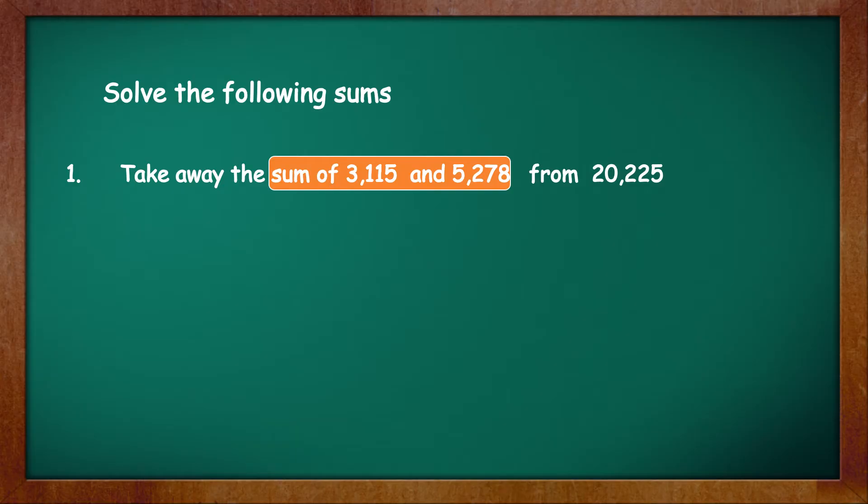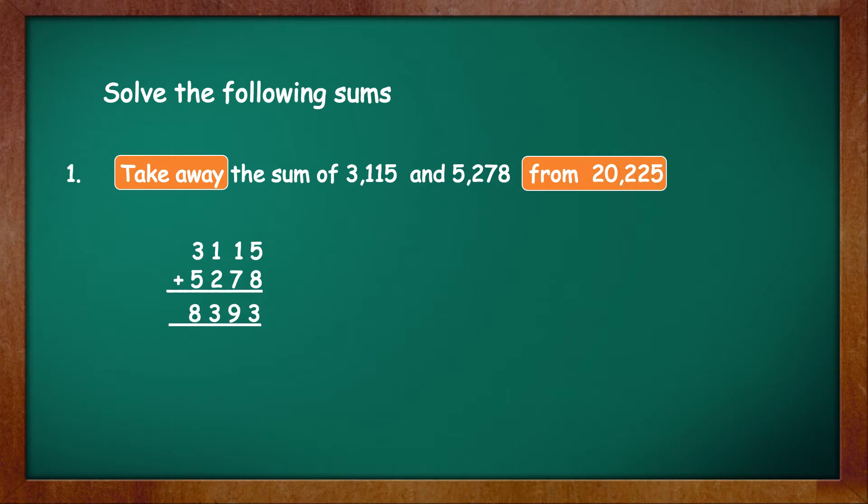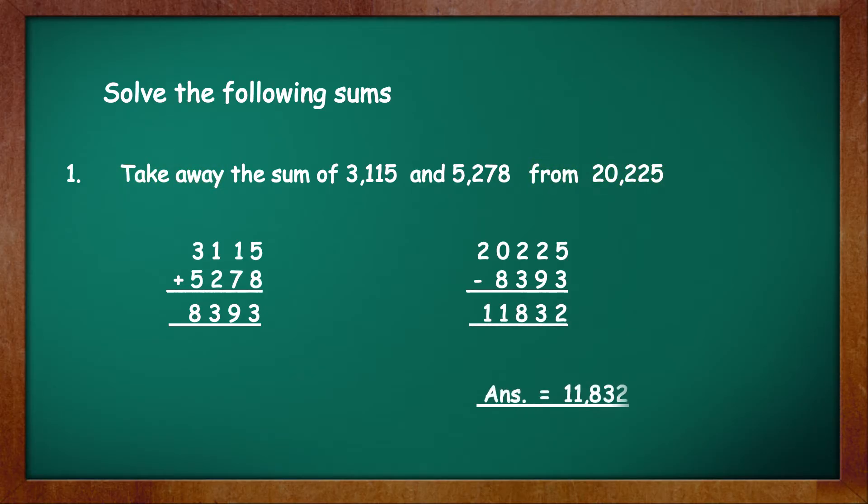So let's find the sum of the two numbers first. 3,115 plus 5,278 is equal to 8,393. Next, you have to take away or subtract this sum from 20,225. So we will write 20,225 minus 8,393, which is equal to 11,832. That's the answer: 11,832.